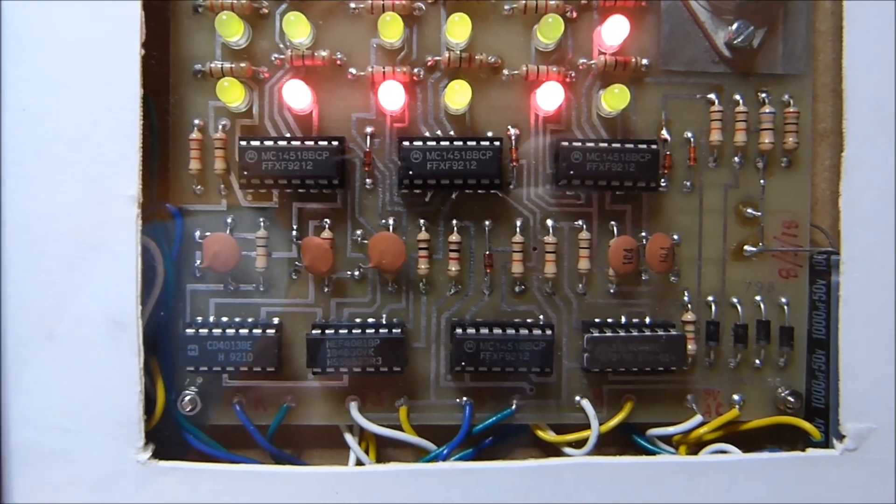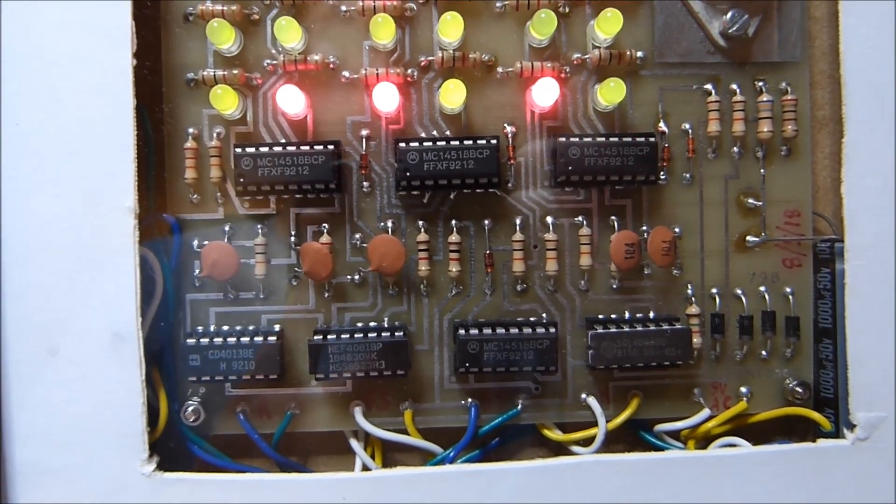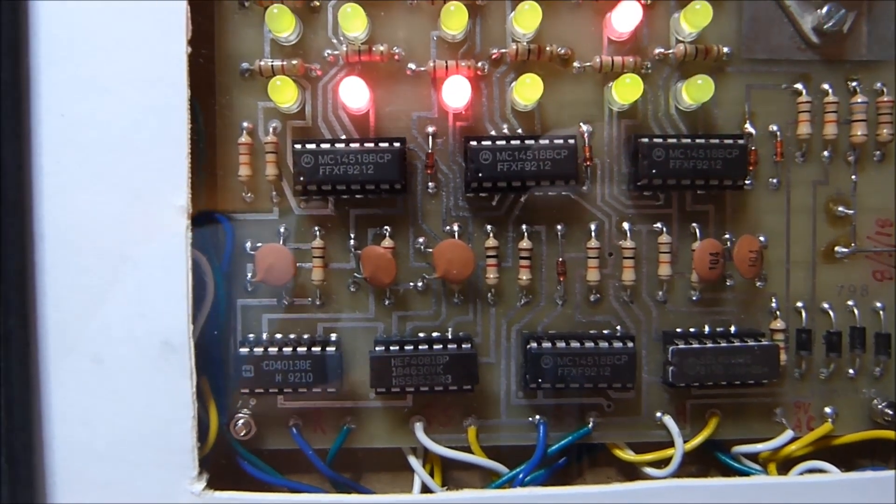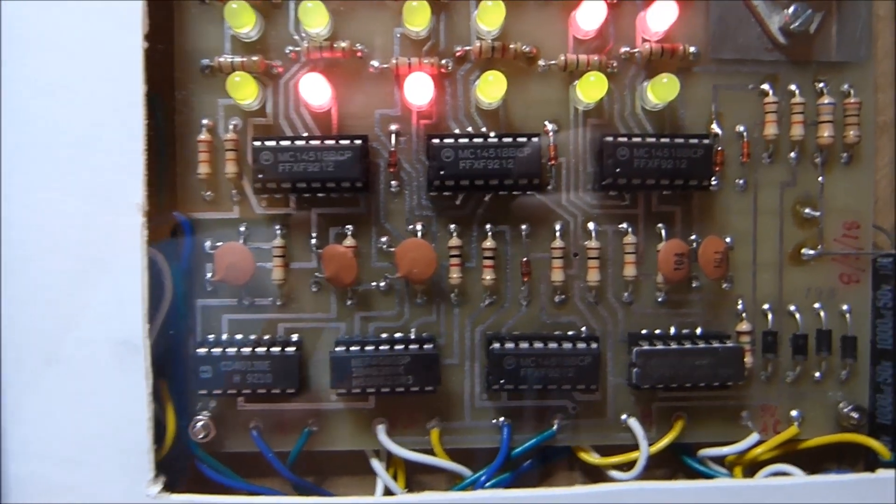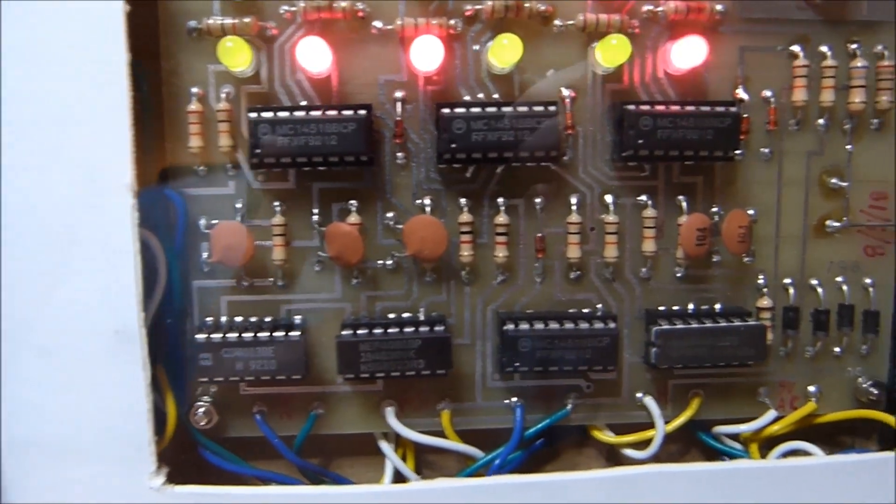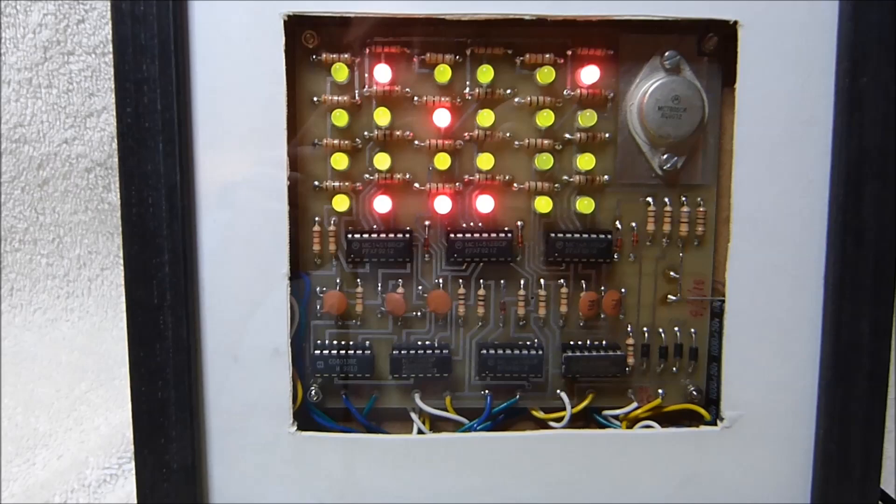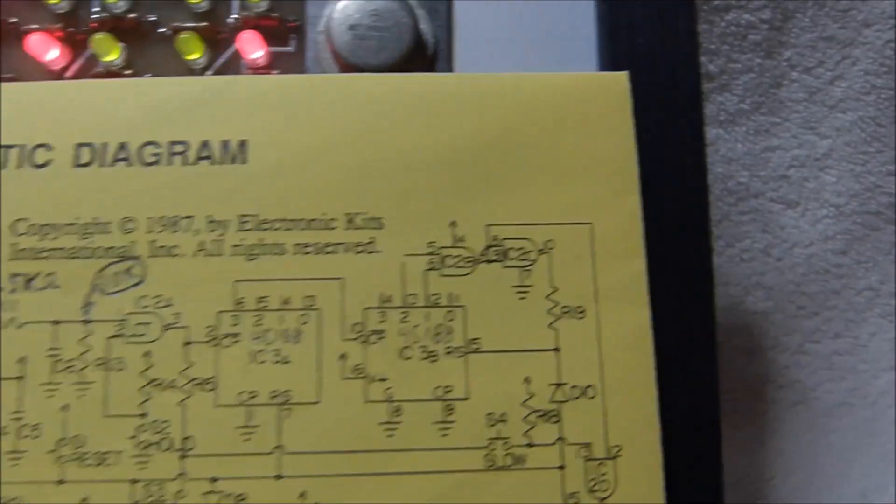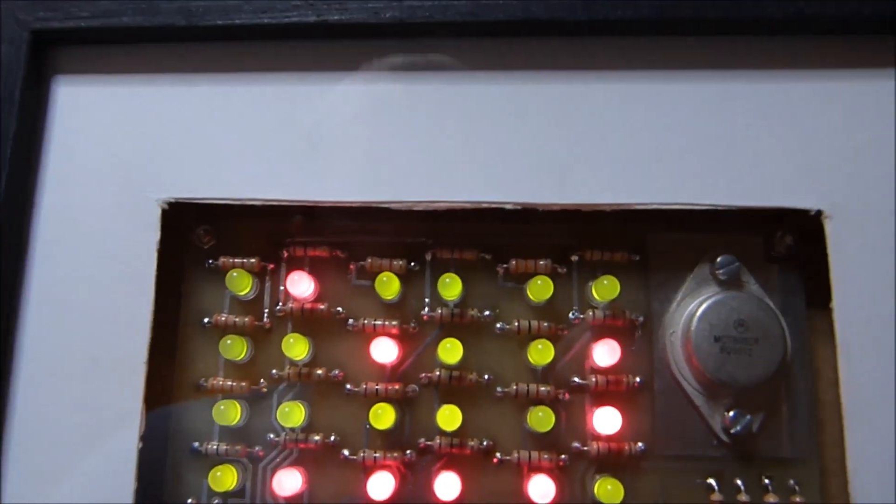Although this clock kit is from 1992, the circuit design is something that you would have found in the 1970s. Those seven CMOS chips there are all that there is to the logic of the clock. There's no processor or clock chip or anything like that. The way this clock works is that it counts the pulses on the AC line and displays that information via these LEDs.